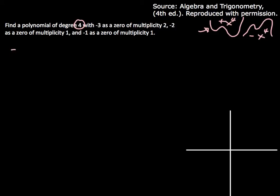Okay, so negative 3 multiplicity 2. It has negative 2 multiplicity of 1, and negative 1 as a multiplicity of 1. Okay, so I have 1, 2, 3, 4 zeros. Good.